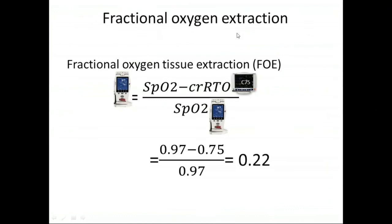How to calculate fractional oxygen extraction? As we mentioned before, the number on pulse oximetry arterial saturation minus the number on the near-infrared spectroscopy machine, divided again by the number on the pulse oximetry, will give you the fractional oxygen extraction.